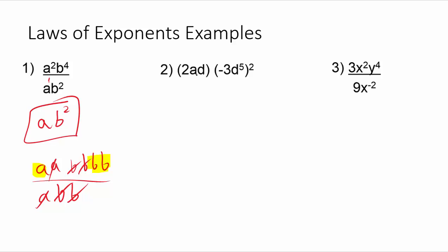So next one here, we got 2ad times the quantity negative 3d to the fifth squared. Now remember your order of operations, if you remember PEMDAS, you've got to make sure you do your exponents before you try to multiply that 2ad into this. So we're going to have to start with this section of the problem first.